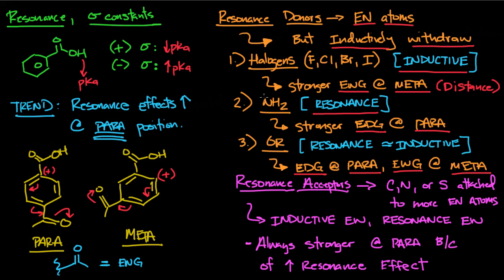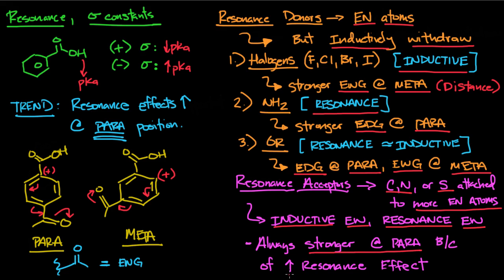The OR group is the only one that truly changes from electron-donating to electron-withdrawing depending on position. For halogens and NH₂, it's just a matter of degree — how strong the withdrawing or donating effect is. Resonance acceptors are simpler: carbon, nitrogen, or sulfur attached to more electronegative atoms — for example, C bound to N, N bound to O, or S bound to O. With acceptors, both the inductive effect and resonance work together to withdraw electrons, and this is always stronger at the para position due to the increased resonance effect.